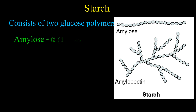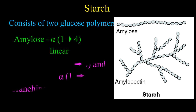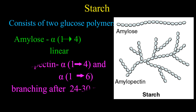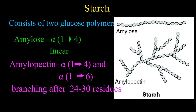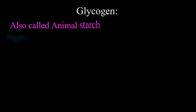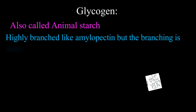in which individual D-glucose residues are held together by alpha-1,4 glycosidic linkage, while amylopectin on the other hand is highly branched, in which alpha-1,6 glycosidic linkage is present after every 24 to 30 residues, while unbranched residues have alpha-1,4 glycosidic linkage.